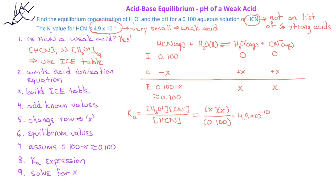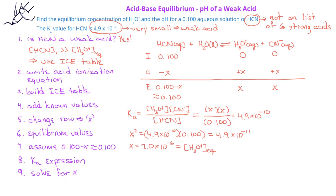When we plug in the values, we get x times x divided by 0.100 equals 4.9 times 10 to the minus 10. We can now solve for x: x squared equals 4.9 times 10 to the minus 10 times 0.100, or x squared equals 4.9 times 10 to the minus 11. When we take the square root of both sides, we find that x equals 7.0 times 10 to the minus 6.